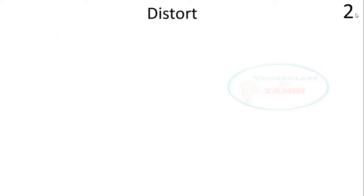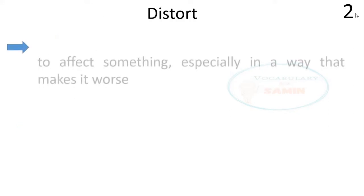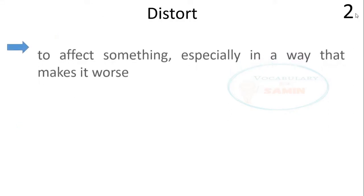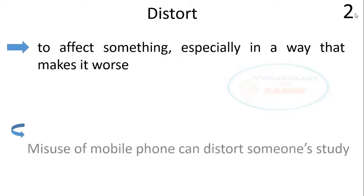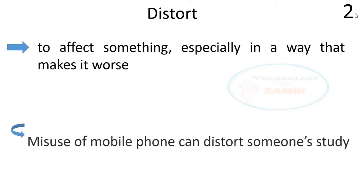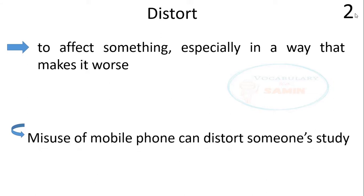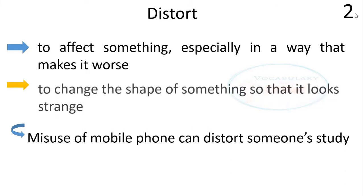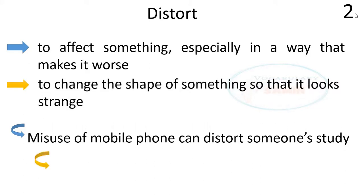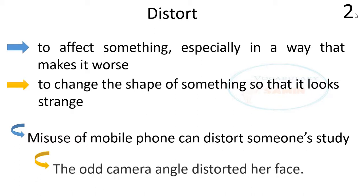The second word is 'distort.' Distort means to affect something, especially in a way that makes it worse. The sentence is: Misuse of mobile phone can distort someone's study. Distort has another meaning: to change the shape of something so that it looks strange. The sentence is: The odd camera angle distorted her face.